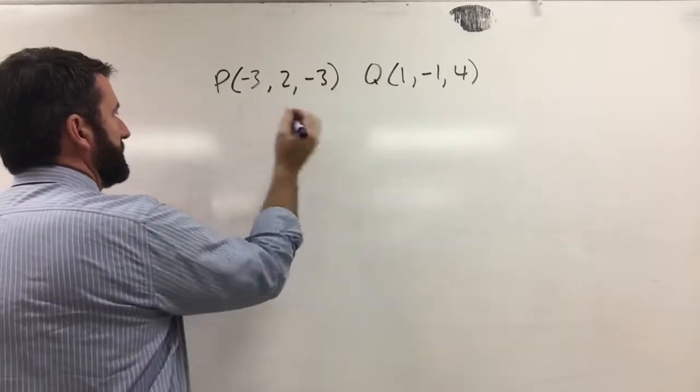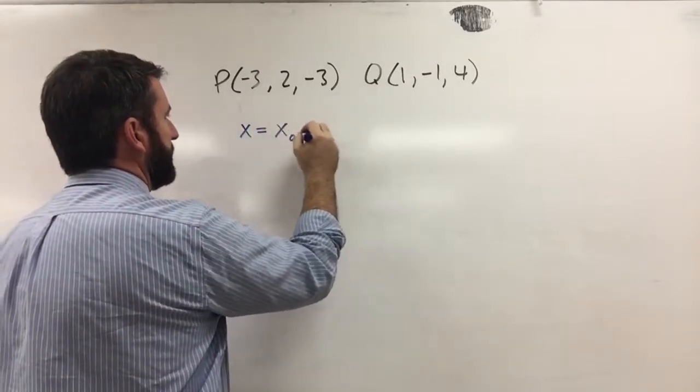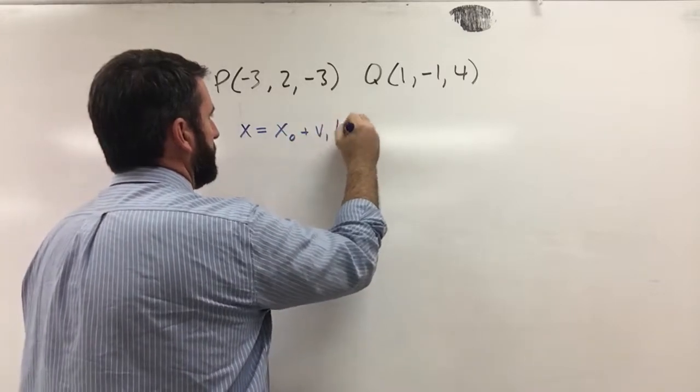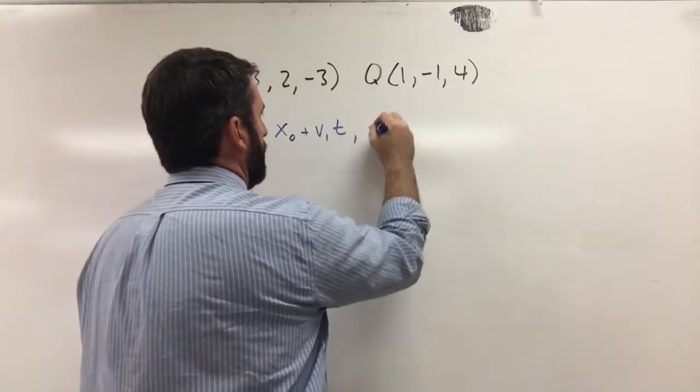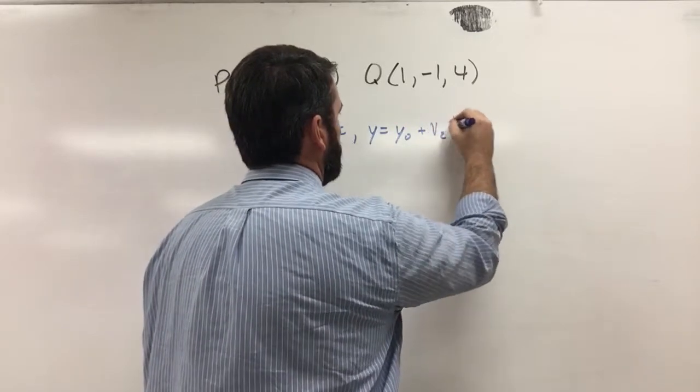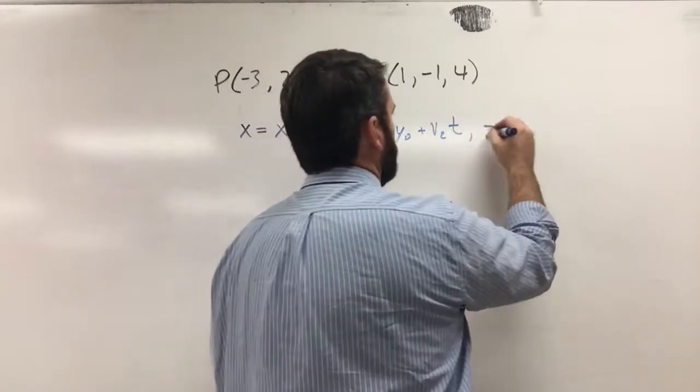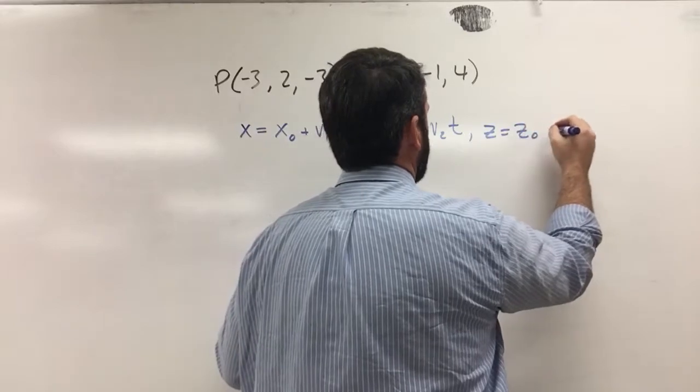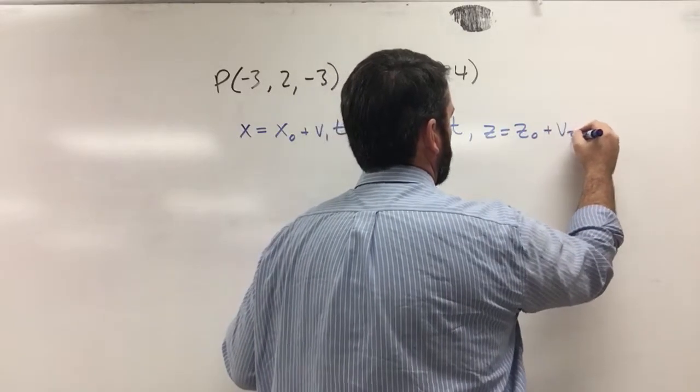So the formula for the parametric equations is going to be x = x₀ + v₁t, y = y₀ + v₂t, and z = z₀ + v₃t.